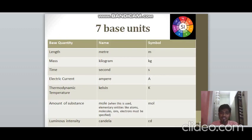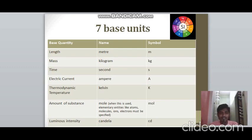The seven base quantities and their SI units are: length (metre), mass (kilogram), time (second), electric current (ampere), thermodynamic temperature (kelvin), amount of substance (mole), and luminous intensity (candela). When using mole, you must also specify the elementary entities — such as atoms, molecules, ions, or electrons.